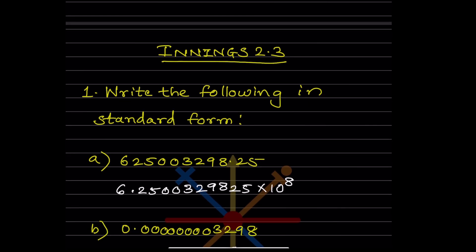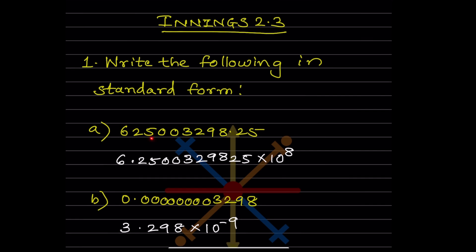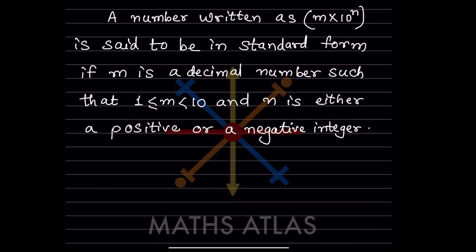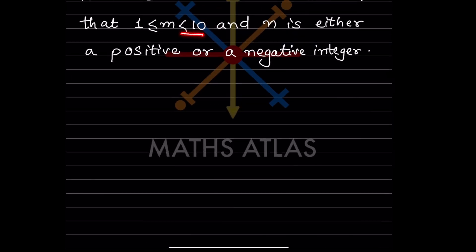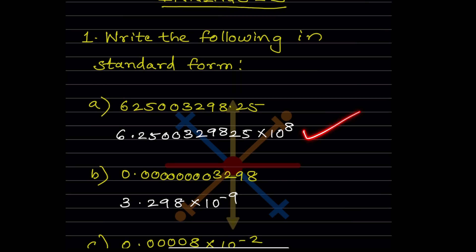Now let us see exercise 2.3: write the following in standard form. The number given is 625003298.85. Since m must be ≥ 1 and < 10, we place the decimal after the first digit, giving 6.2500329885. Counting the digits after the new decimal point — 1, 2, 3, 4, 5, 6, 7, 8 — we write it as 6.2500329885 × 10^8.